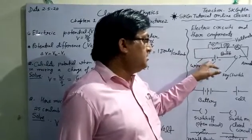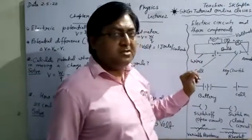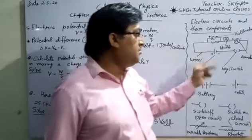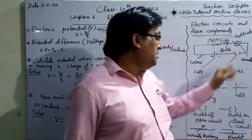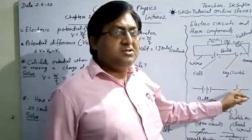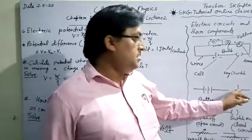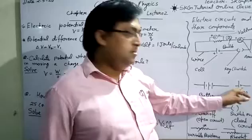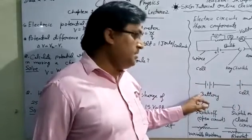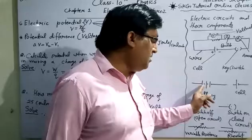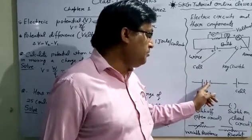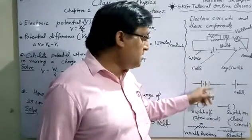Dear students, this is symbol of electric cell which has two terminals, positive and negative. This is a symbol of electric cell and this is symbol of battery. You can see here three positive terminals: positive, negative, positive, negative, positive, negative. It means it is combination of three cells.